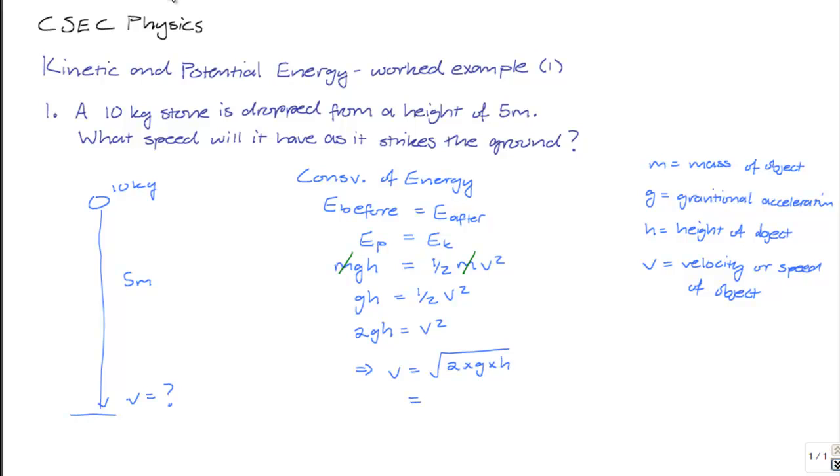We know that the height involved, h, is 5 meters, and the value of g that we commonly work with is g equals 10 meters per second squared. So, V will be equal to 2 times 10 meters per second squared times 5 meters, or the square root of 100 meters squared per second squared.